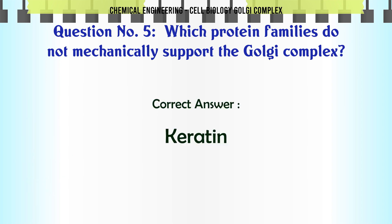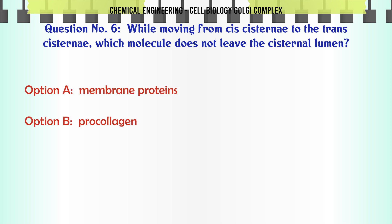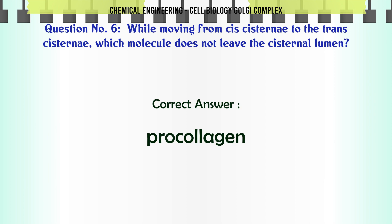While moving from cis cistern to the trans cistern, which molecule does not leave the cisternal lumen? A) membrane proteins, B) procollagen, C) oligosaccharides, D) lysosomal proteins. The correct answer is procollagen.